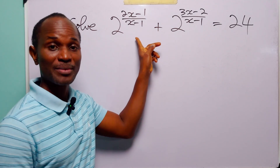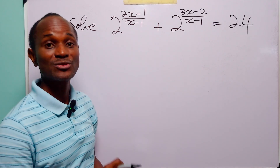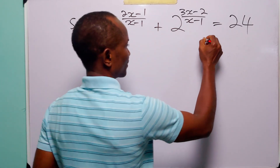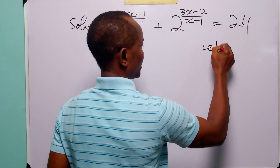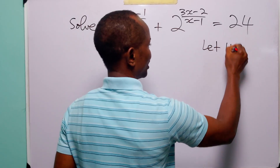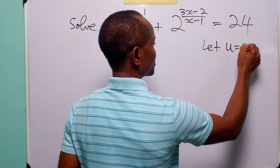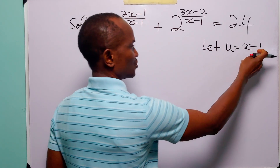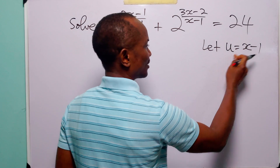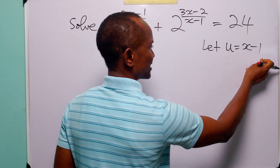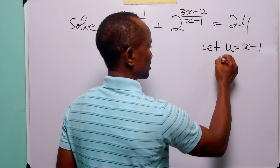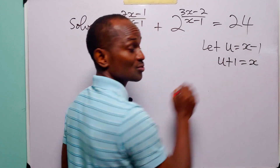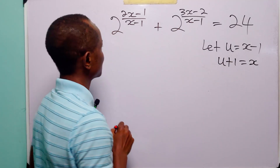So to solve this problem, we are going to start with a very simple substitution. Let u be equal to x minus 1. And of course, when we add 1 to both sides of this equation, we have that u plus 1 is equal to x.